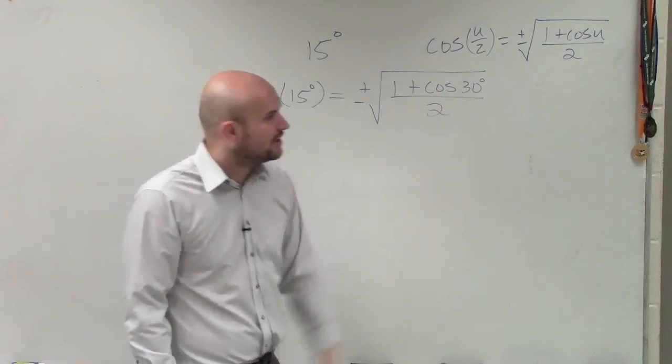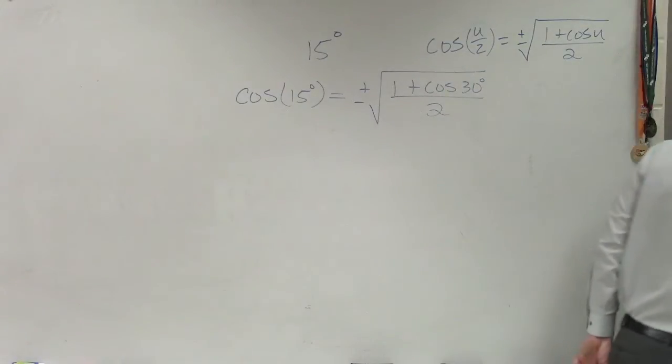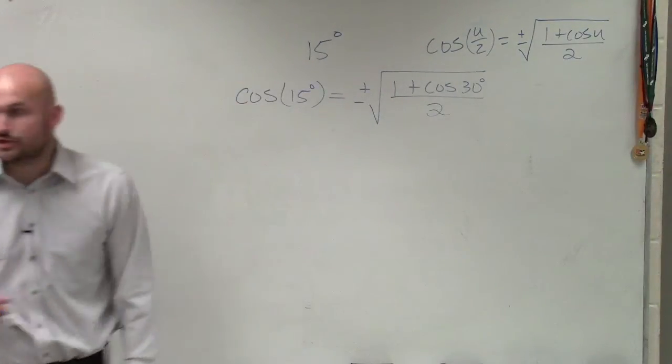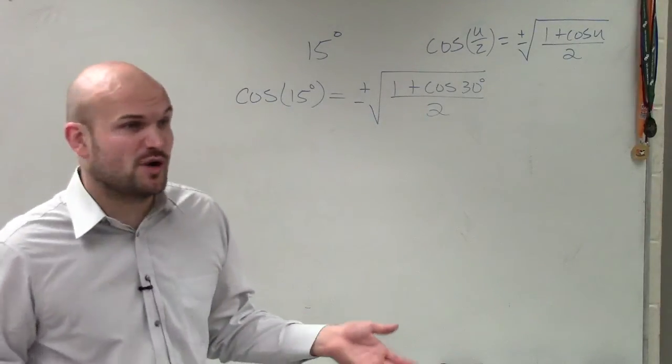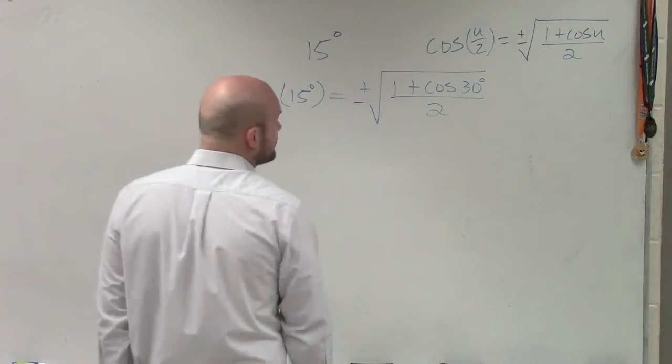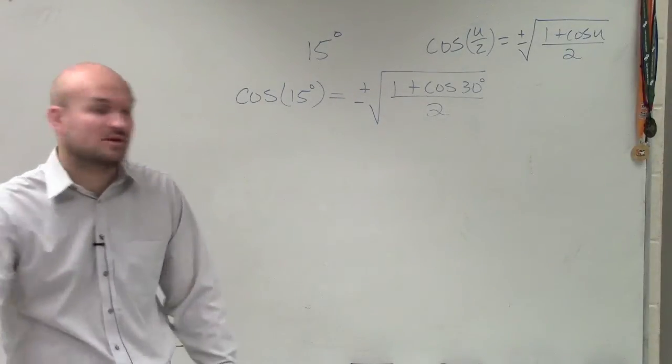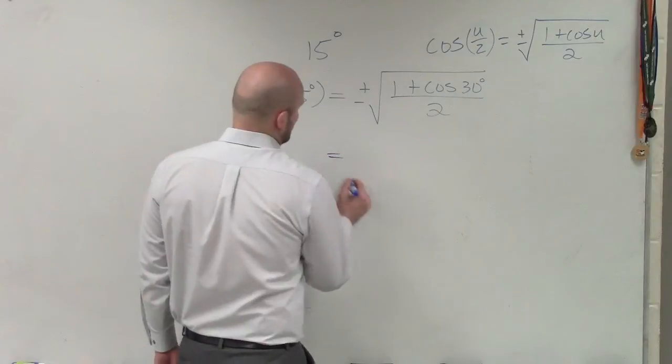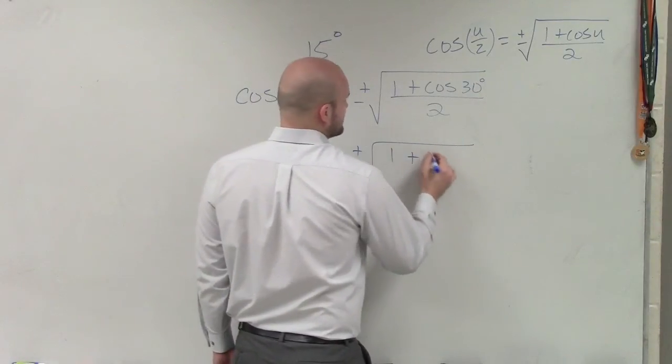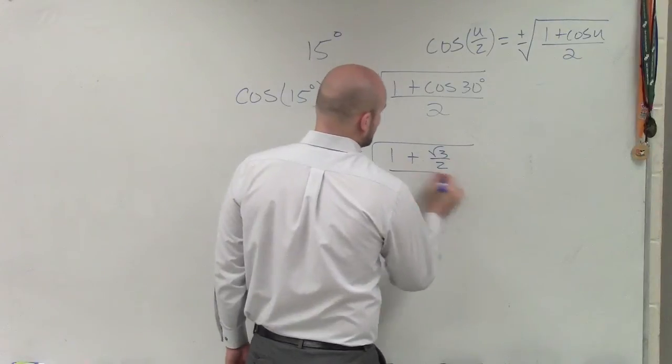So now, let's just go ahead and evaluate this. Cosine u divided by 2. Let's just go and figure out where cosine equals 30 degrees. So cosine at 30 degrees, we already did, which was what? Square root of... 1 half? No, 30 degrees at 60 degrees. Cosine is going to be square root of 3 over 2. So therefore, we have plus or minus 1 plus the square root of 3 over 2 divided by 2.